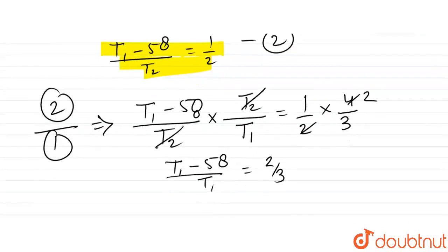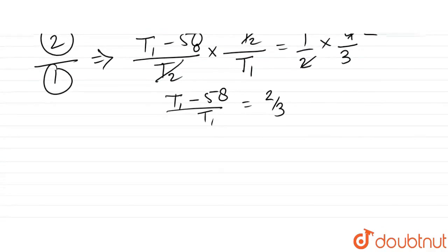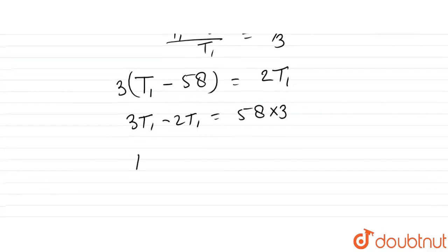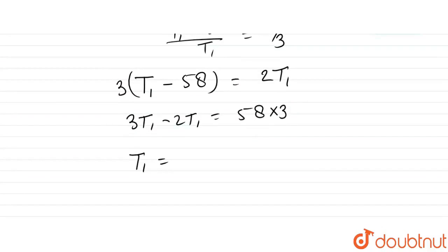So the ratio is 2/3. Therefore 3(T₁ - 58) equals 2T₁. Cross-multiplying: 3T₁ - 2T₁ = 58 × 3. So T₁ = 58 × 3, which equals 174 degrees centigrade.